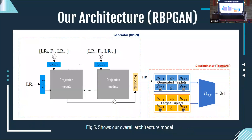For the architecture, the generator will be taken from the RBPN network while the discriminator will be taken from TQGAN, to ensure good accuracy and good temporal flow. Now Darin will continue with the loss functions.